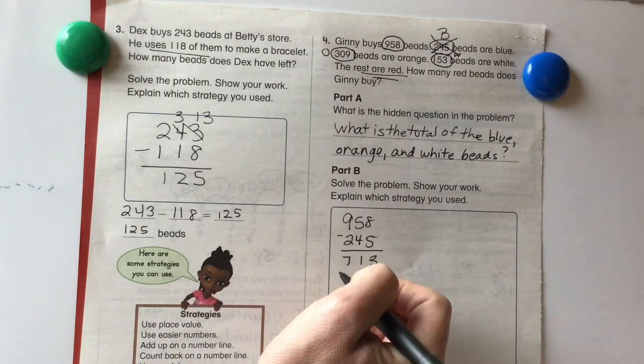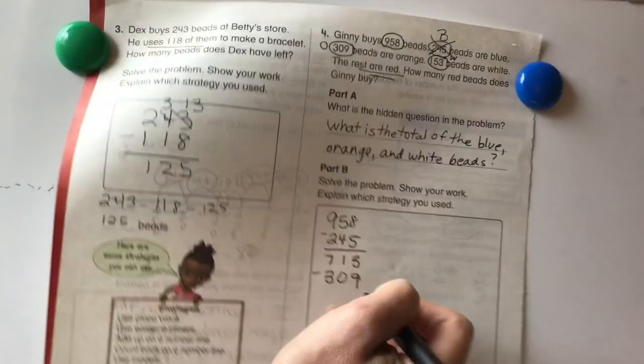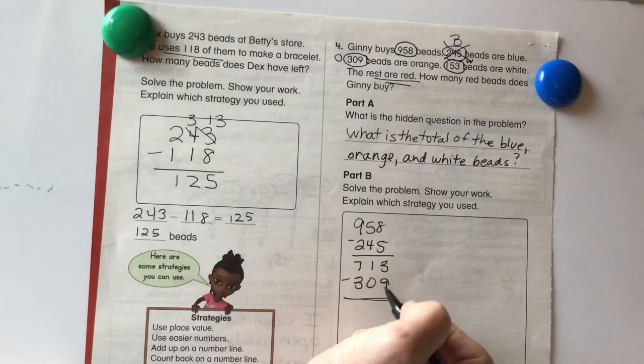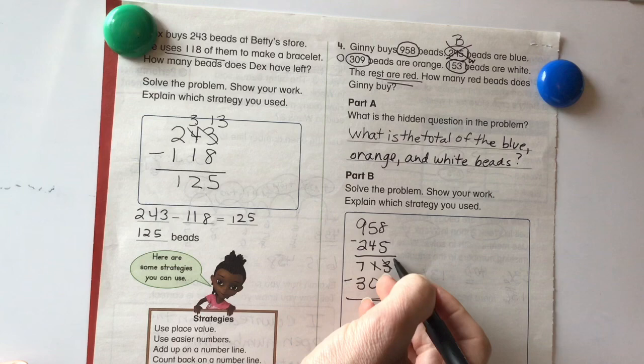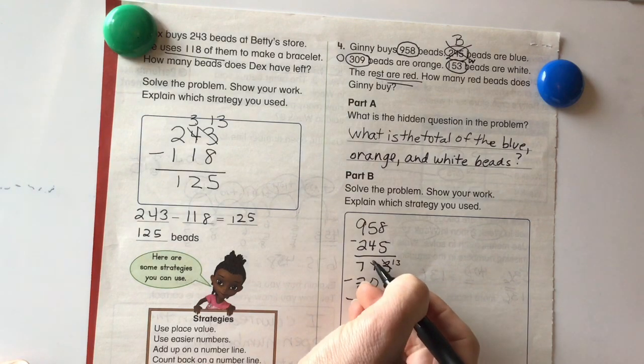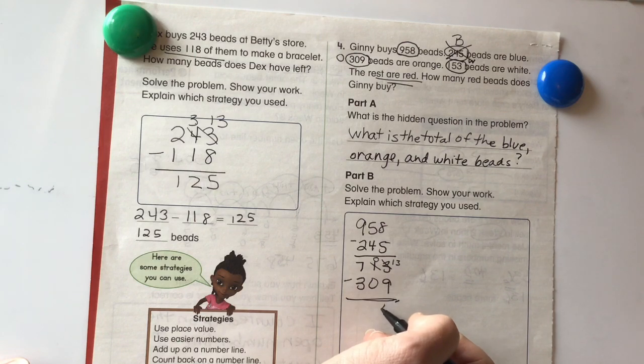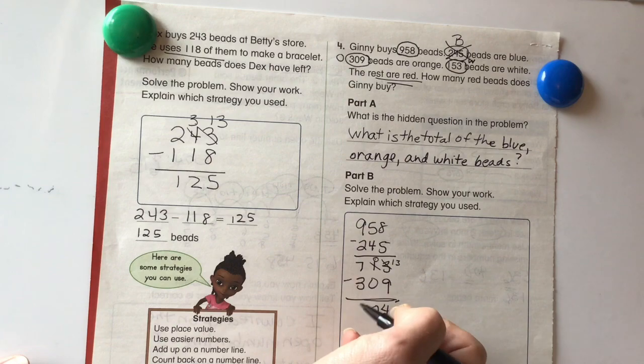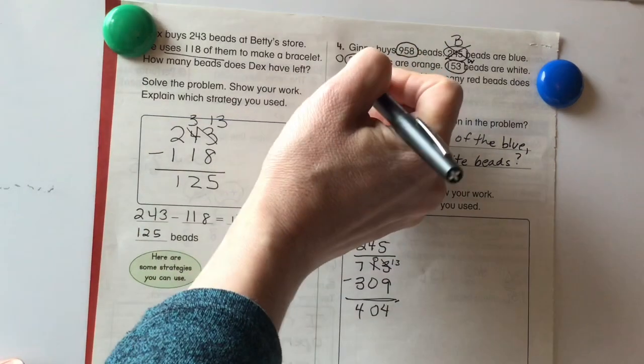Now let's do our orange beads. Minus 309 beads are orange. Okay. All right, so 3 minus 9 is not going to work. So we'd have to take a group of 10 over. That becomes 13. 1 minus 1 is 0. 13 minus 9 is 4. 0 minus 0 is 0. And 7 minus 3 is 4. Okay, so now we did our orange beads.